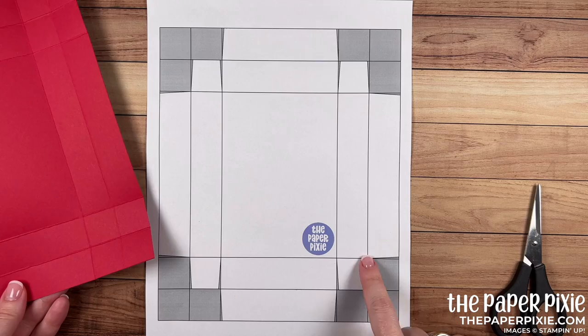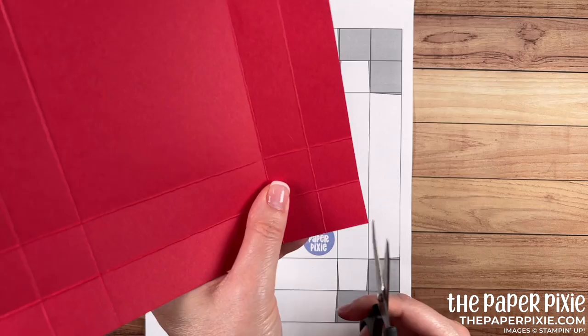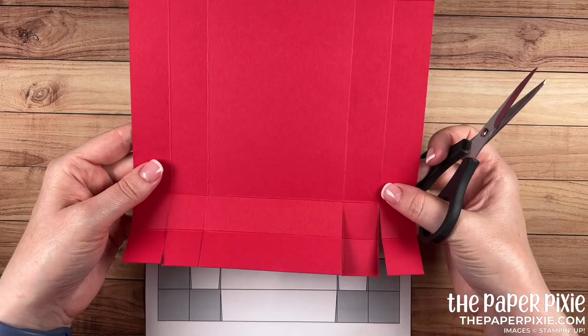All right let's start with the box base. That's the larger piece and I have this in portrait mode. I'm going to cut up each of the vertical score lines stopping at the second horizontal score line and I'm just cutting right up the middle of those score lines.